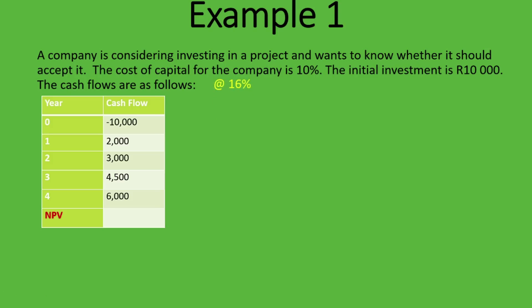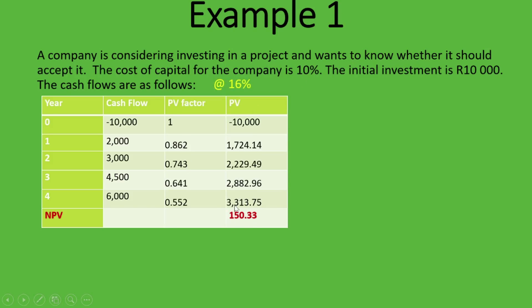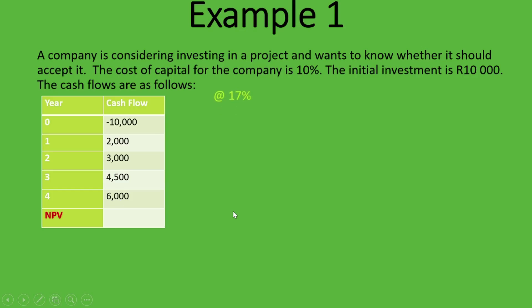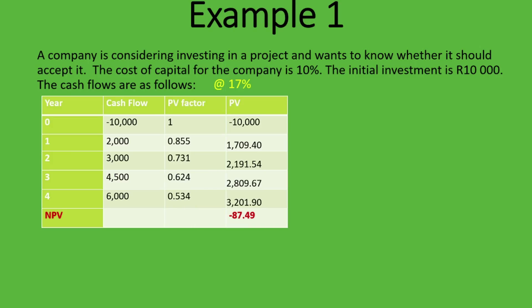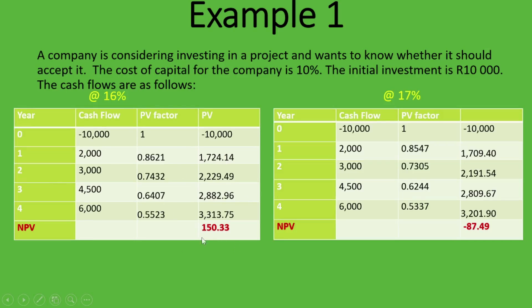Let's try 16% — that gives an NPV of 150 rand 33 cents, still positive. The IRR is still higher. Since we're getting closer to zero, let's try 17%. At 17%, the NPV is minus 87 rand 49 cents — negative. So the internal rate of return is between 16% and 17%, because at 16% the NPV is positive and at 17% it's negative.